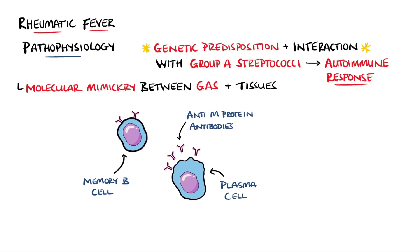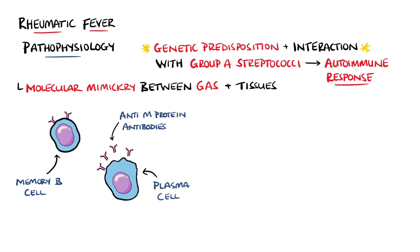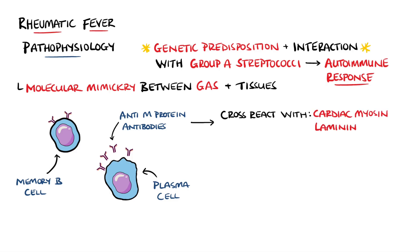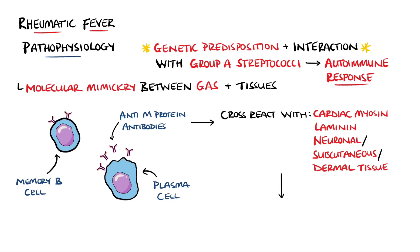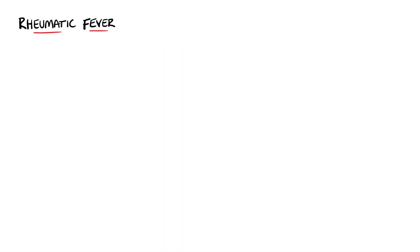However, due to molecular mimicry — meaning similar structures of the molecules — antibodies against these antigens also cross-react with molecules in the body. These include cardiac myosin, laminin, as well as molecules in neuronal, subcutaneous, and dermal tissues. The targeting by the antibodies of these tissues generates a type 2 hypersensitivity reaction.